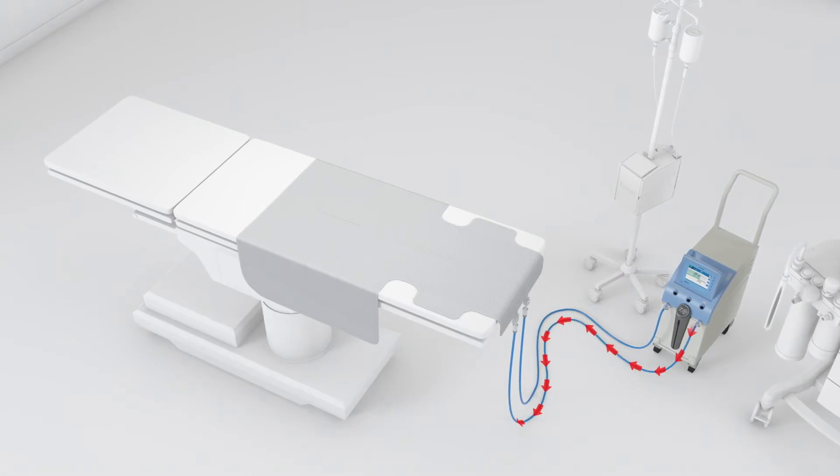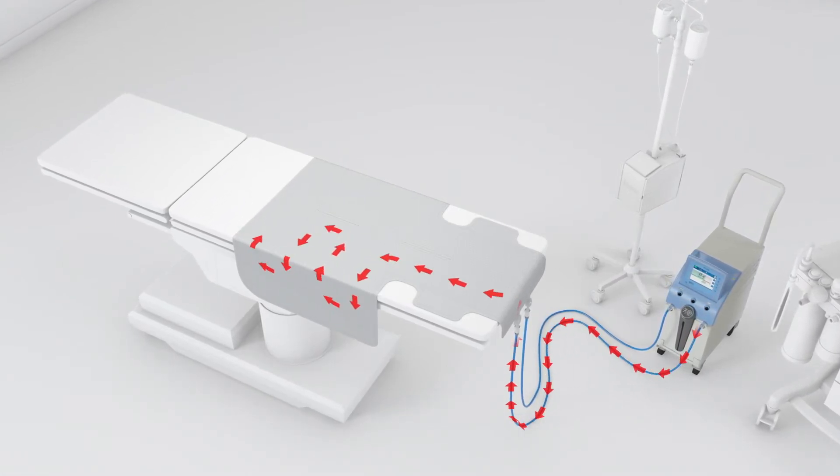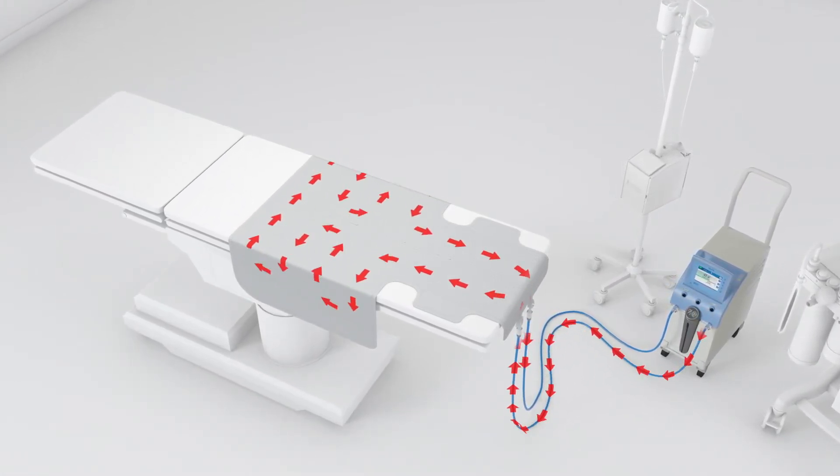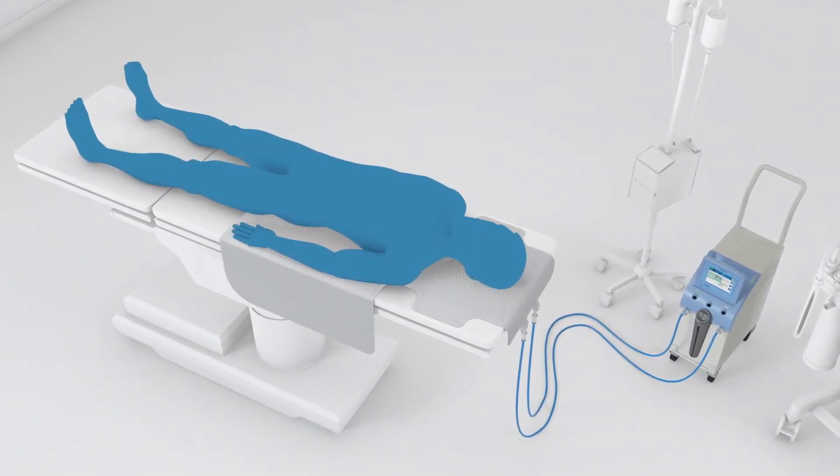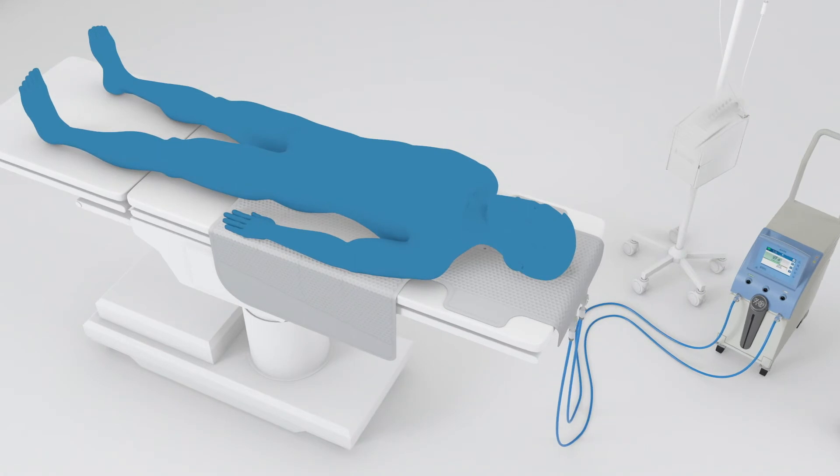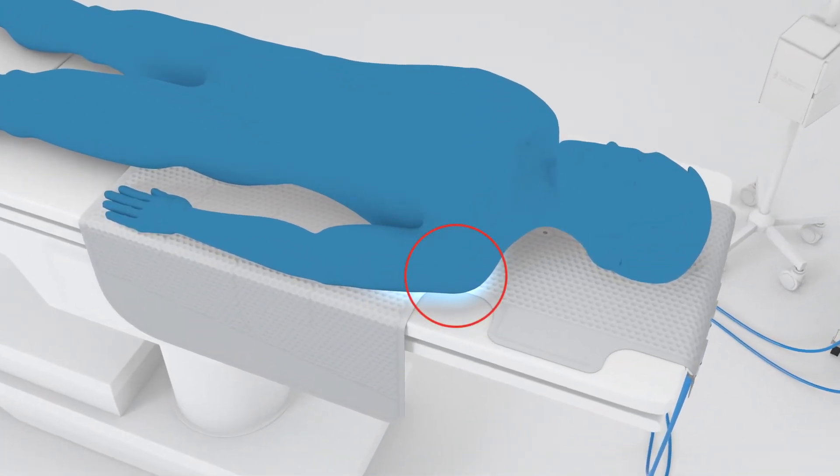When preheating is complete, the thermal wrap fills with water automatically. When the wrap is filled, it will already be warm and the patient can be positioned on the wrap. Be sure to note the proper placement of the shoulders on the wrap.